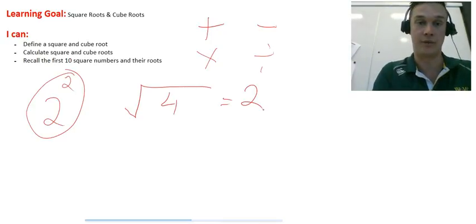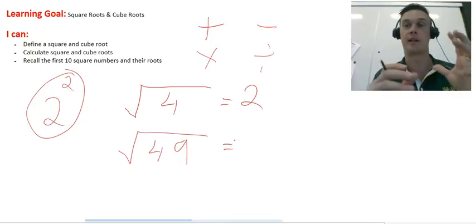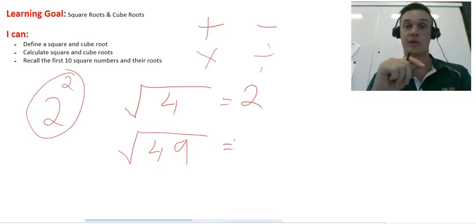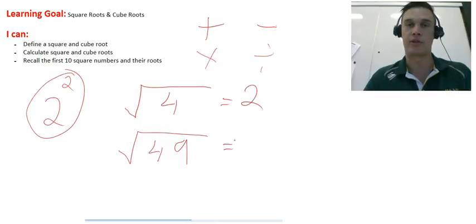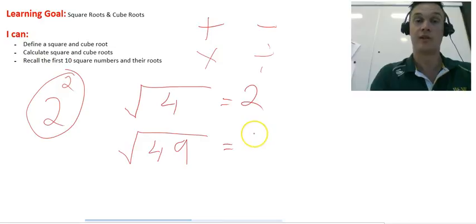Let's just look at another example. If we did the square root of 49, we need to think a number times itself is going to equal 49. So you really need to be up with your multiplication tables. I know that 7 times 7 equals 49, so the square root of 49 equals 7.